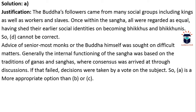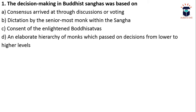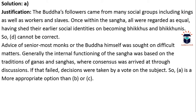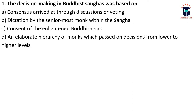Buddhist followers came from many social groups including kings, workers, and slaves. Once in the Sangha, they were regarded as equal, having shed their earlier social identities. Option D cannot be correct because there was clearly no hierarchy of monks. Advice of the senior-most monks or the Buddha himself was sought on difficult matters. The internal functioning of the Sangha was based on traditions of Ganas and Sanghas where consensus was arrived at through discussions; if that failed, decisions were taken by vote. So A is the most appropriate answer.